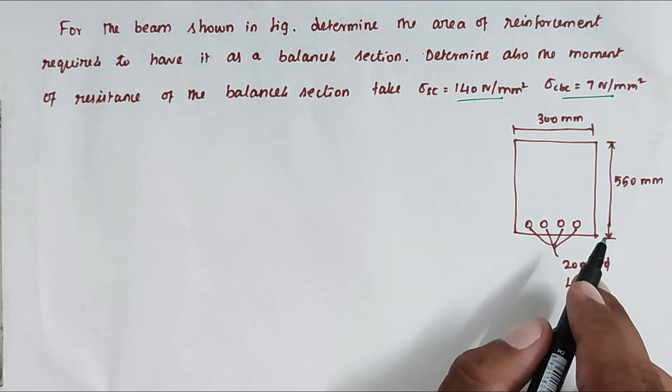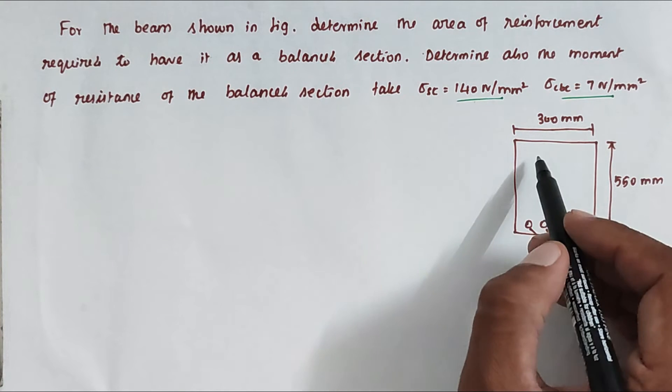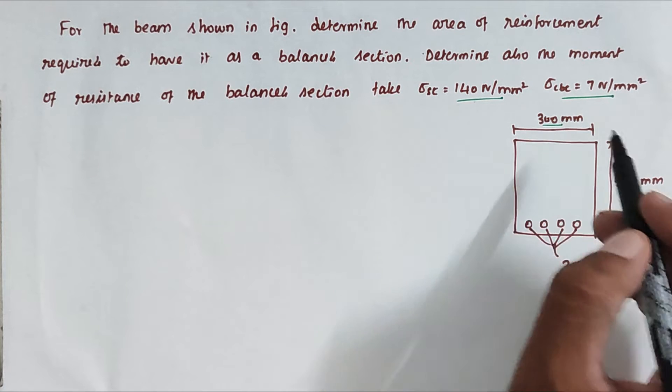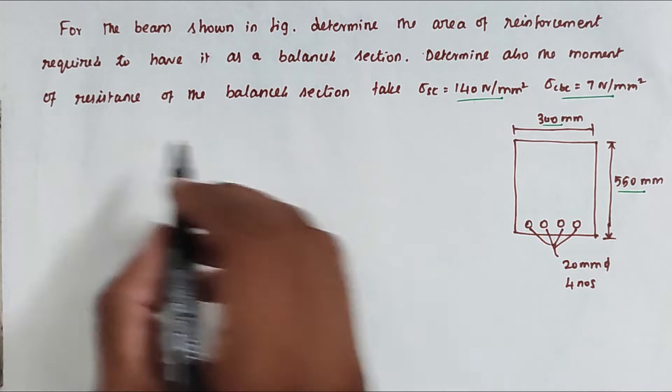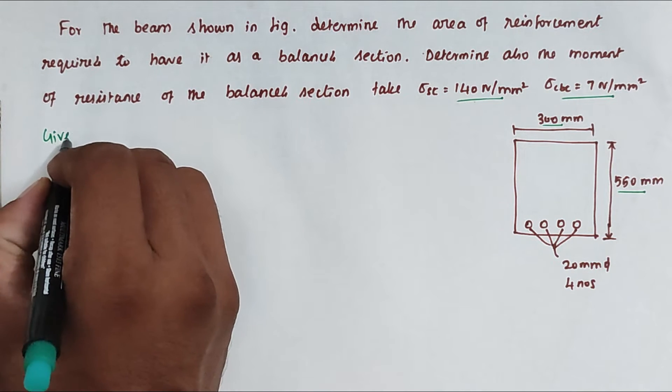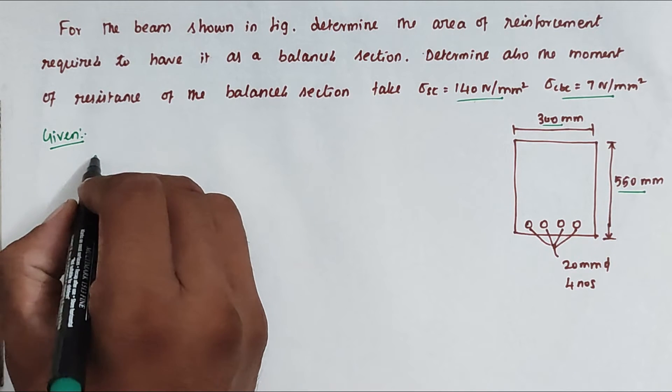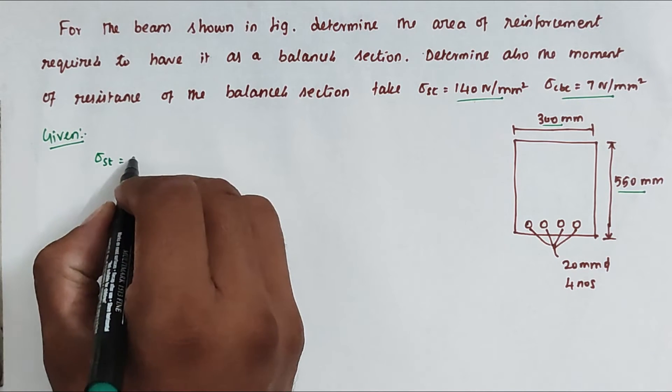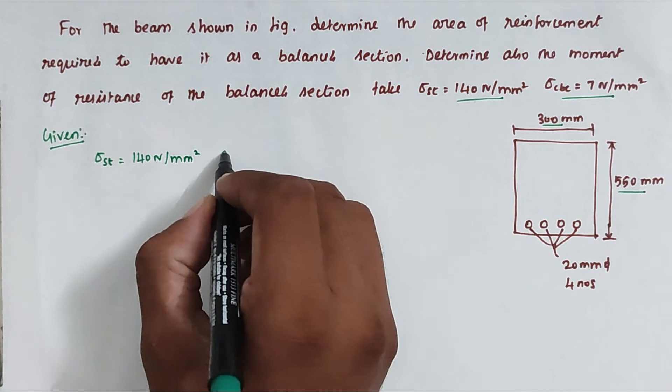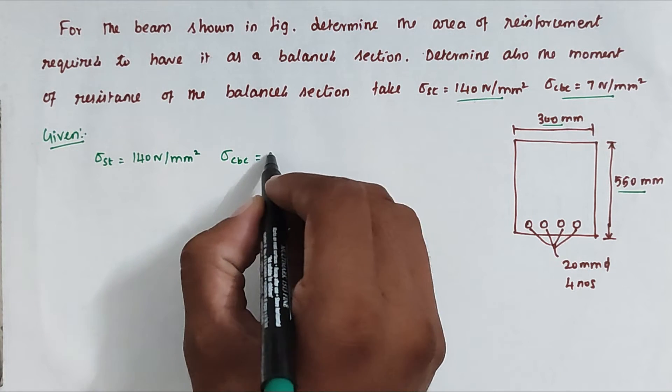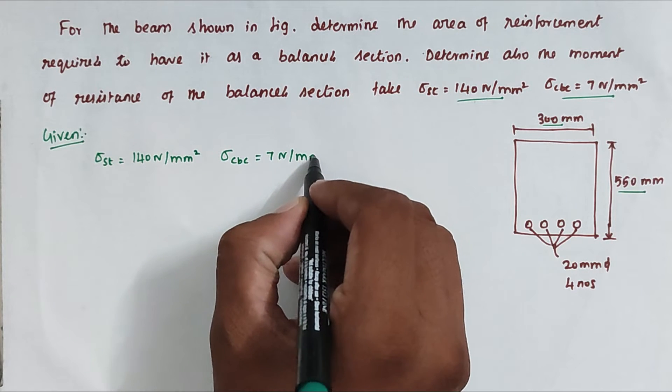So this is the figure: the width is 300 mm and depth is 550 mm, with four numbers of 20 mm dia bars. The given values are: σ_ST = 140 N/mm², σ_CBC = 7 N/mm², D = 550 mm, and B = 300 mm.